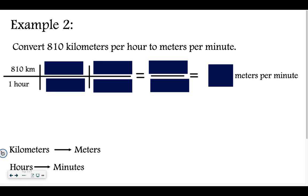Example 2: convert 810 kilometers per hour to meters per minute. I start with what they give me. The word 'per' means divide. So I write 810 kilometers divided by 1 hour. I know I have to convert from kilometers to meters and hours to minutes.